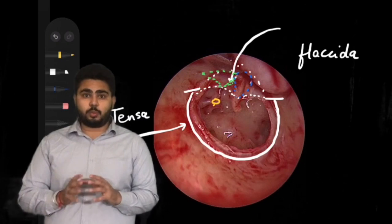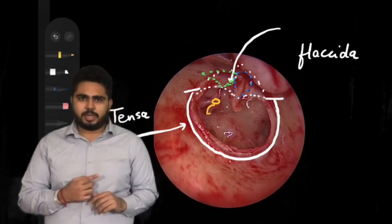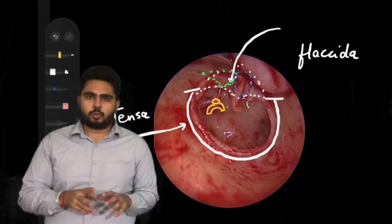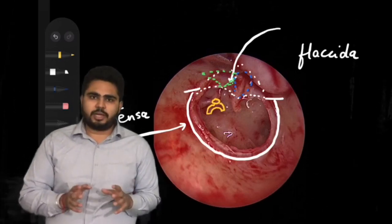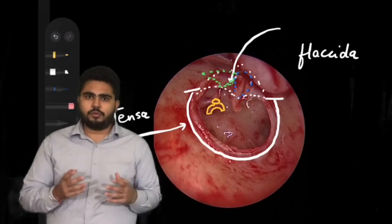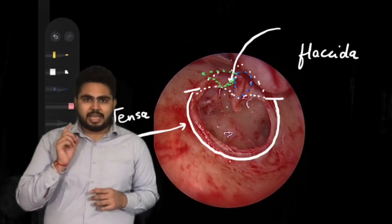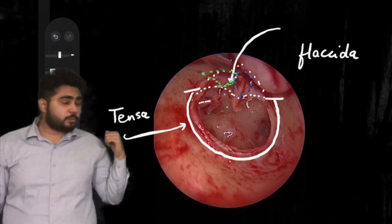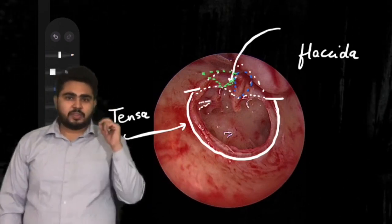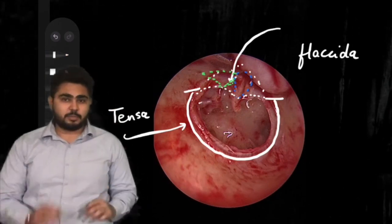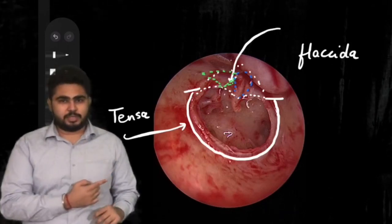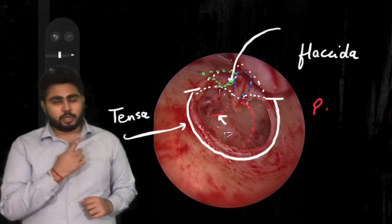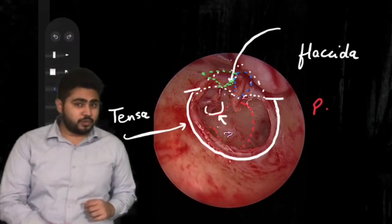We will be able to see only the long process of the incus. This long process will have the lenticular process along with it, which makes a joint with the stapes. We will be able to see the stapes — it has the head, neck, and two crura attached to a foot plate, with the foot plate covering the oval window. The incudostapedial joint will be clearly visible. Coming from the posterior wall, we can see the tendon of the stapedius muscle coming from the pyramid and attaching to the stapes. The promontory is visible, posterior superior is the oval window, and posterior inferior is the round window.